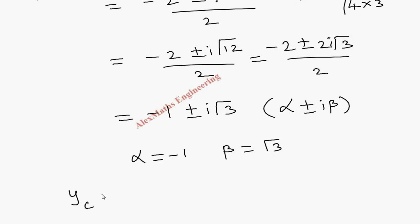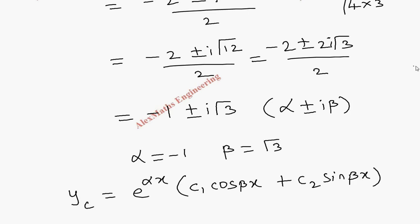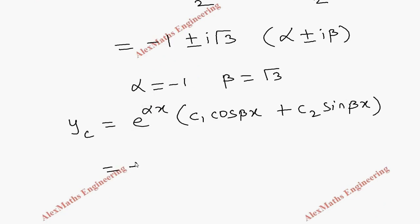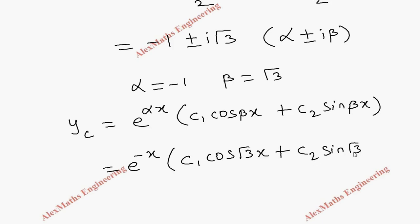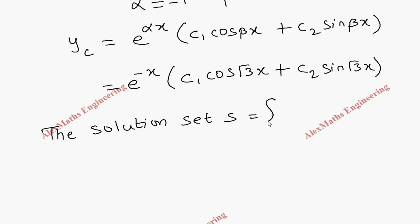The complementary function gives e^(αx) · (c1·cos(βx) + c2·sin(βx)). By substituting, we get the complementary function: e^(−x) · (c1·cos(√3·x) + c2·sin(√3·x)). The solution set consists of two elements: e^(−x)·cos(√3·x) and e^(−x)·sin(√3·x).